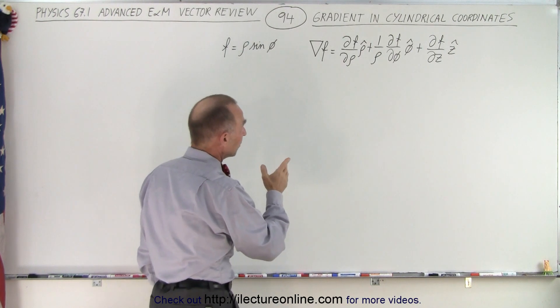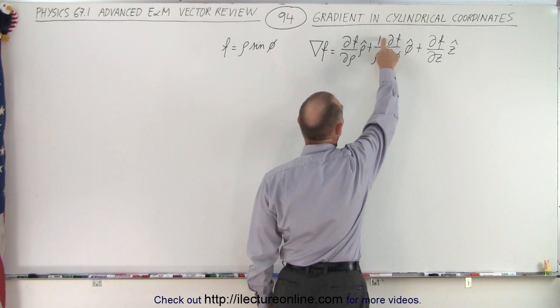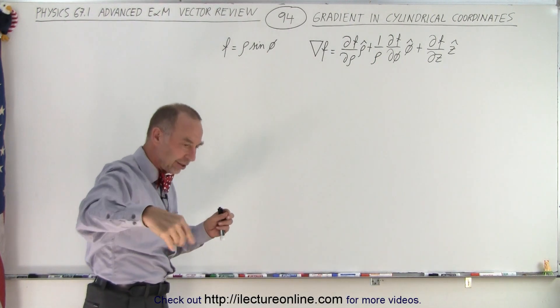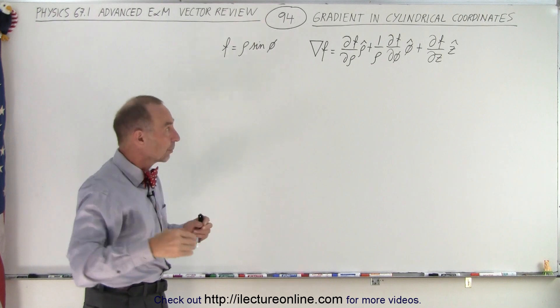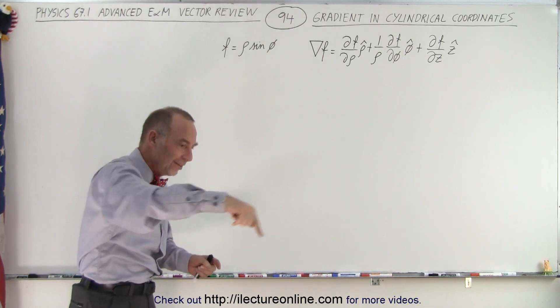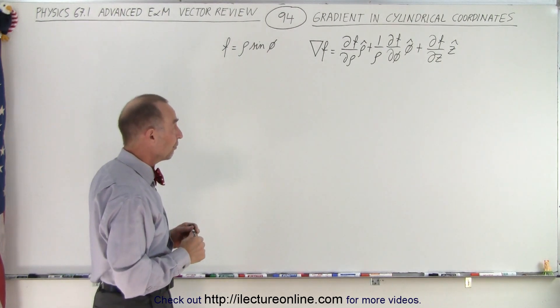Notice we have to take the partial derivative with respect to each of the three variables. Here for the middle term we have a 1 over rho because after all, the farther out you go in cylindrical coordinates, the larger rho becomes. And you want to make the change in the angle going around the z-axis independent of that distance. And so therefore we have a 1 over rho factor in there.